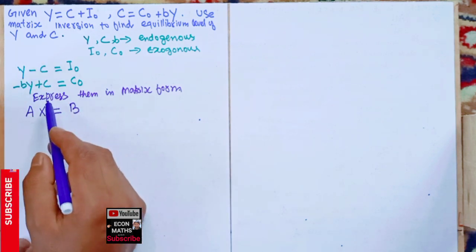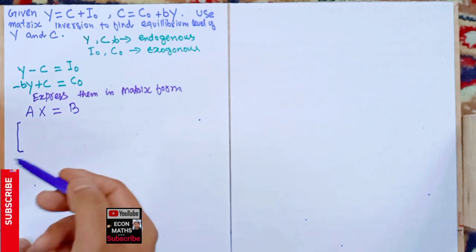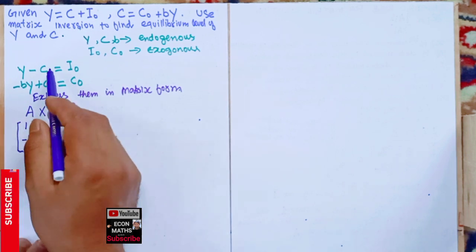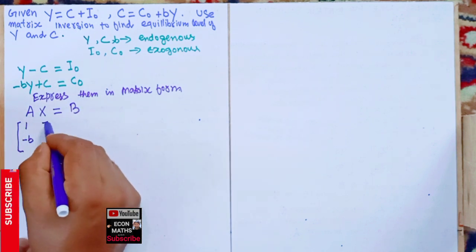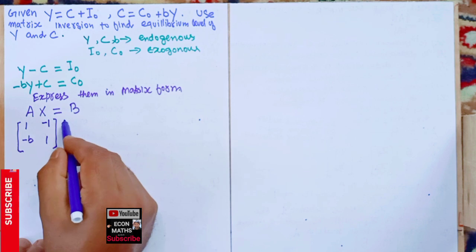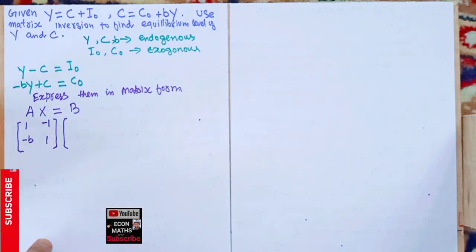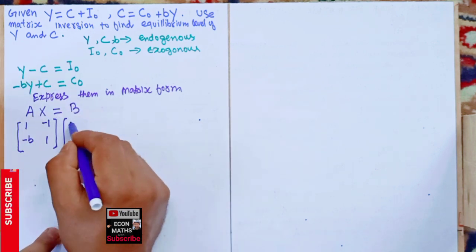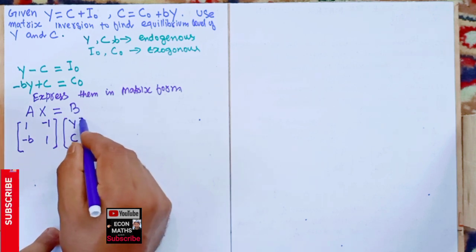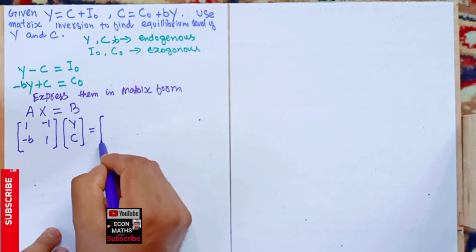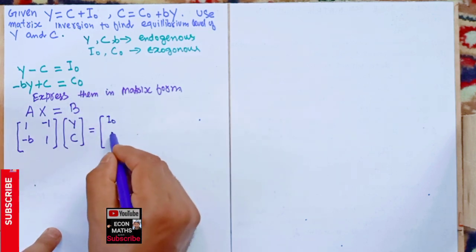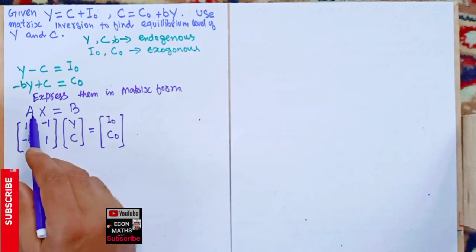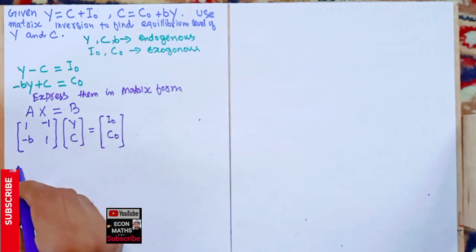The coefficients of Y and C form the coefficient matrix A. The coefficient of Y in the first equation is 1 and in the second is −b. The coefficient of C in the first equation is −1 and in the second is 1. The solution vector X contains Y and C, and the constant vector B contains I₀ and C₀.